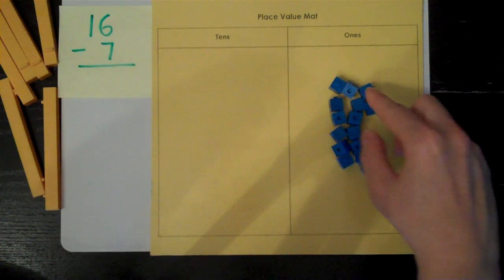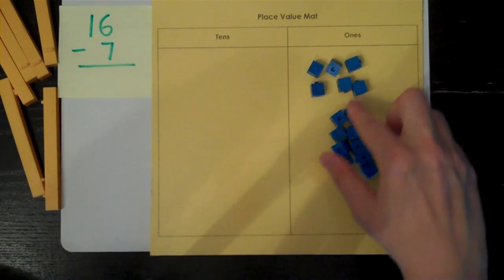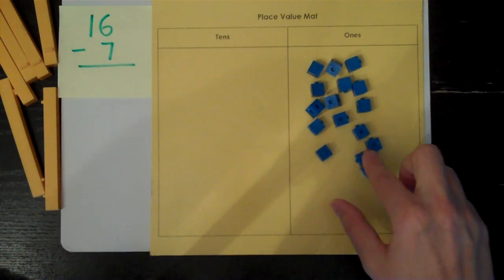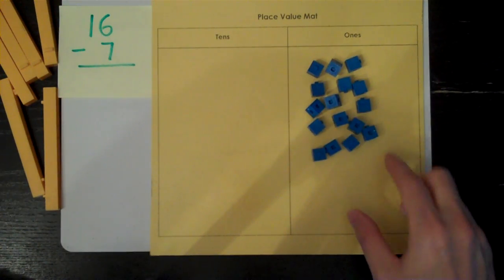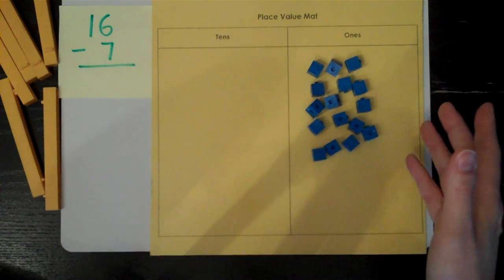I now have 16 ones. One, two, three, four, five, six, seven, eight, nine, ten, eleven, twelve, thirteen, fourteen, fifteen, sixteen. Sixteen take away seven is now possible.